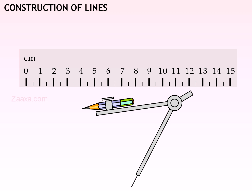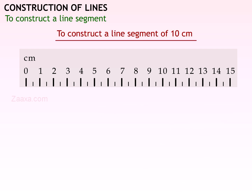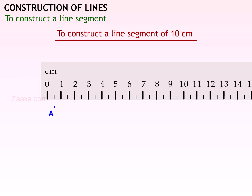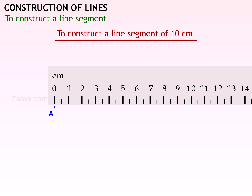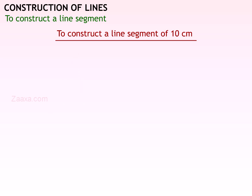Now let us learn how to do some constructions. To construct a line segment of 10 centimeters, first mark a point A. Place the zero centimeter mark of the ruler on A and mark a point B against the 10 centimeter mark of the ruler. Draw a straight line between A and B.